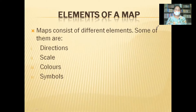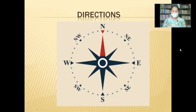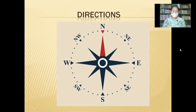Some of the map elements are directions, scale, colors, and symbols. There are four main directions: north, east, west, and south. If we stand facing a map, the top part of the map is north, bottom is south, right is east, and left is west.